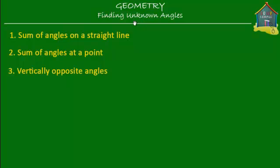Welcome to homecampus.com.sg. In this lesson we learn about certain special properties of lines and angles. We'll find out what the sum of angles on a straight line is, what the sum of angles at a point is, and we'll also find out that vertically opposite angles are equal to each other.